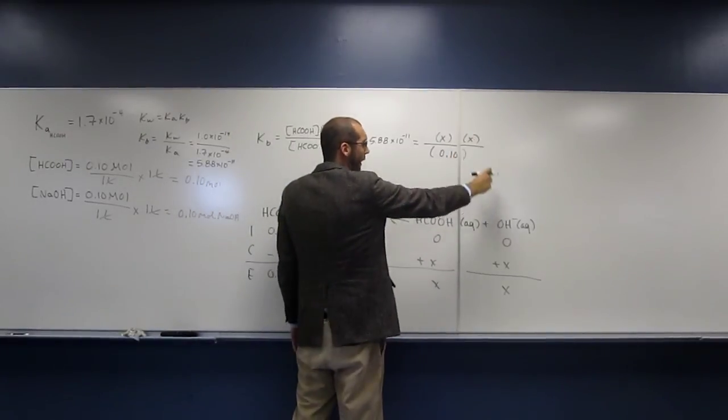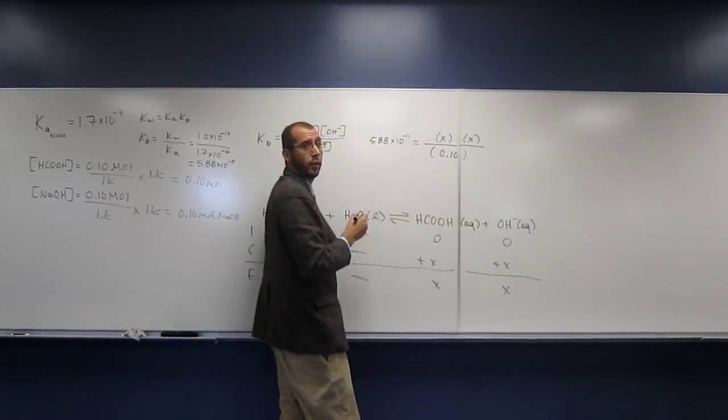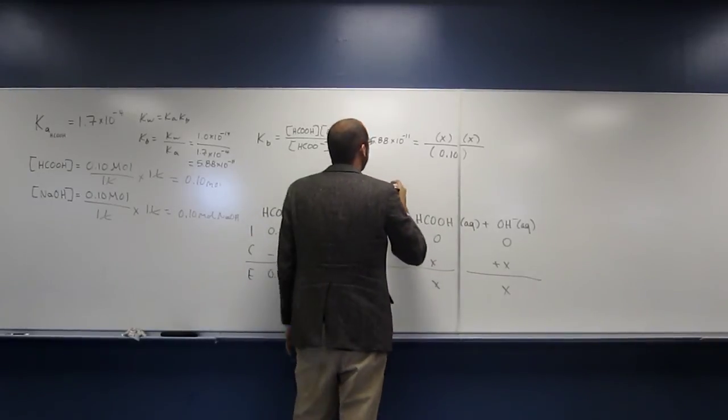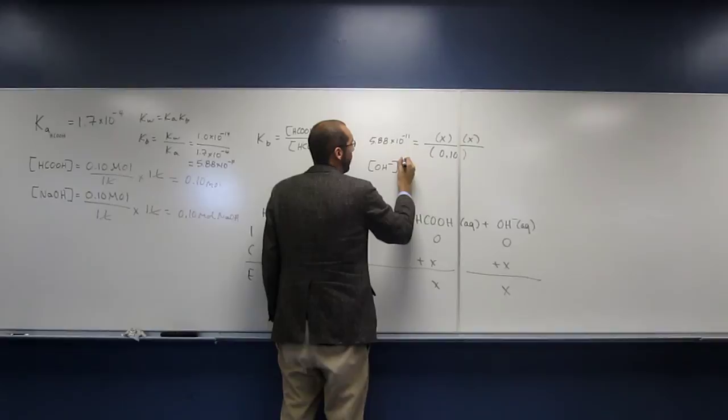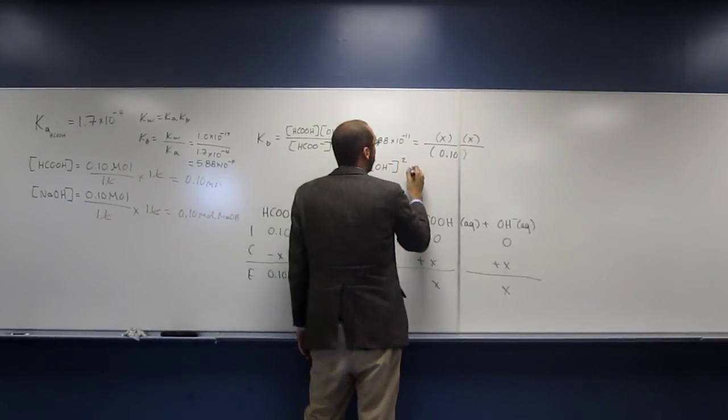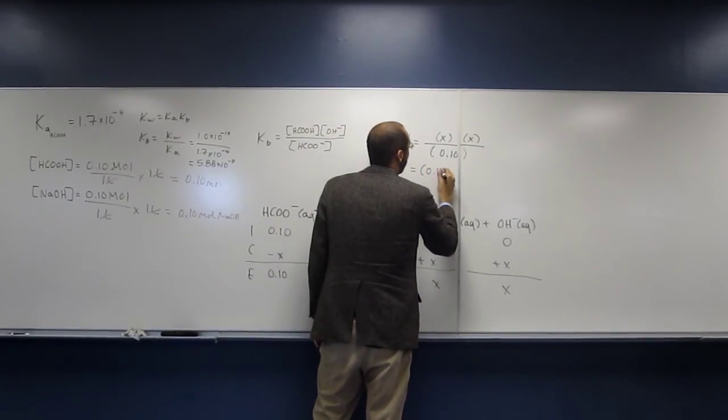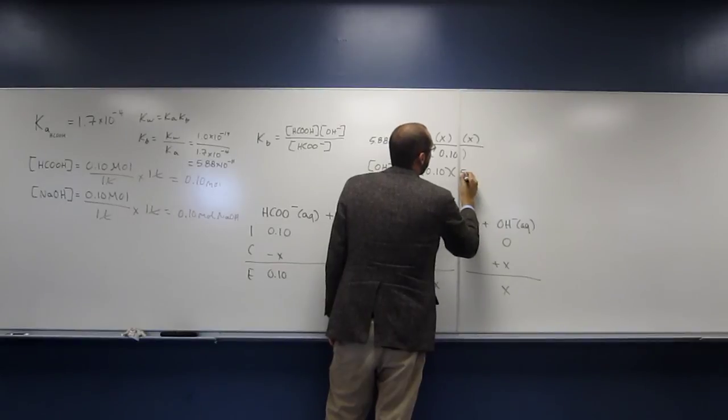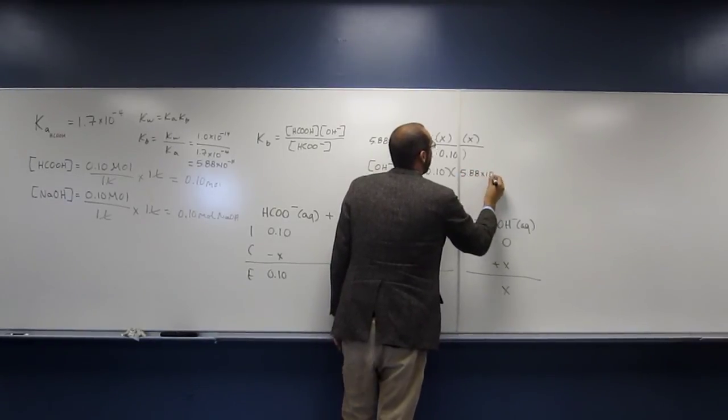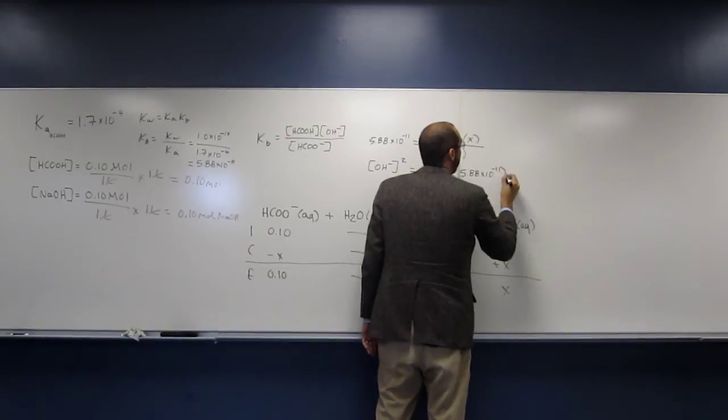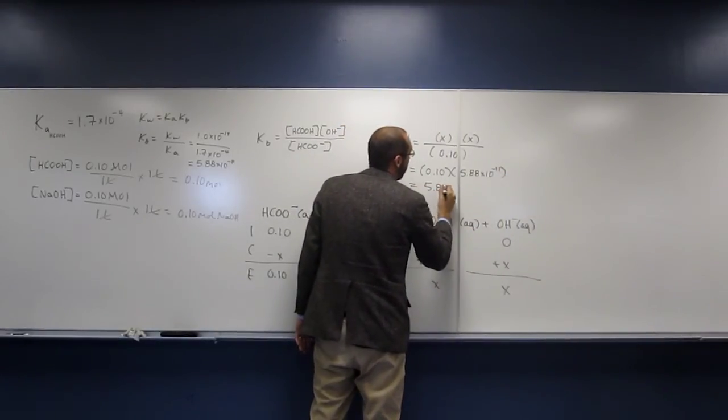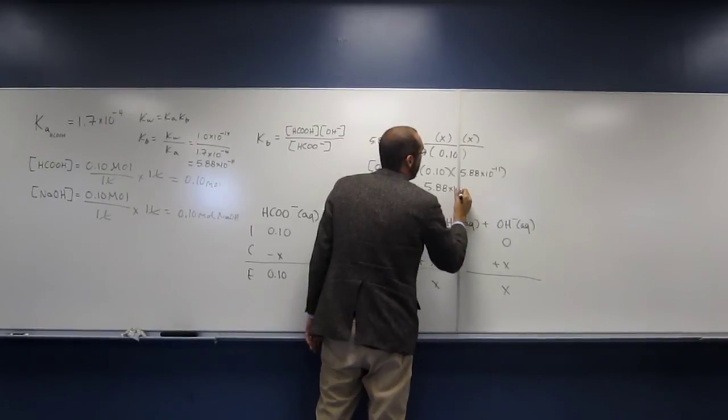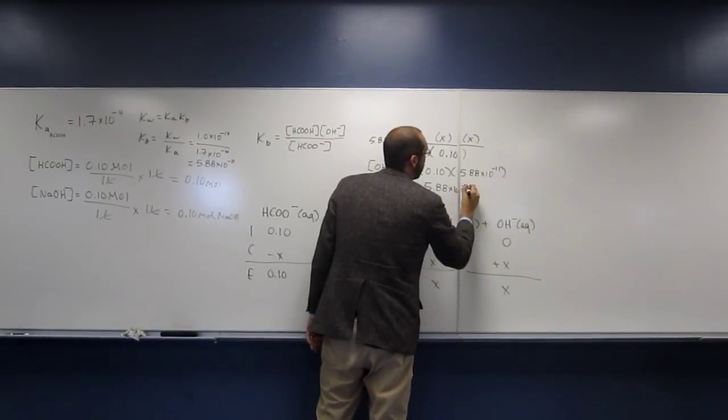So 5.88 times 10 to the negative 11th equals X times X divided by 0.10. So remember X is the concentration of hydroxide ion, so if we rearrange this thing, we're going to have hydroxide ion squared equals 0.10 times 5.88 times 10 to the negative 11th. So that's 5.88 times 10 to the negative 12th.